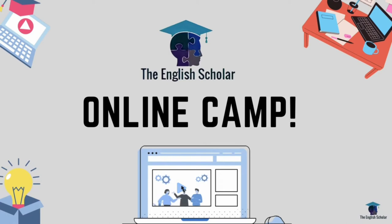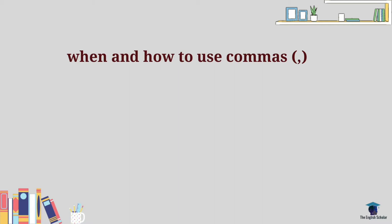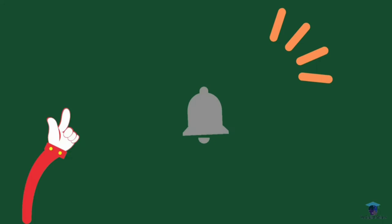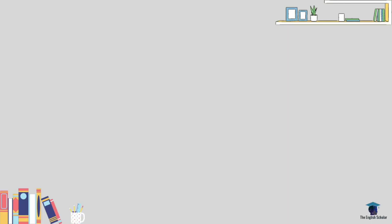Welcome to the English Scholar Online Camp. In this video we'll talk about when and how to use commas — specifically when there are coordinating conjunctions such as for, and, nor, but, or, yet, and so in a sentence. But before we start, please don't forget to subscribe and hit the notification bell for exclusive English grammar tutorials.